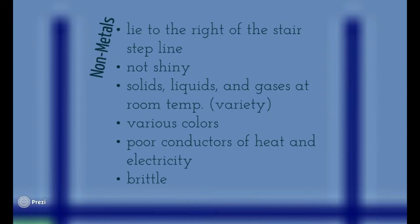Non-metals come in a variety of temperatures and many different colors, so they're not very plain like a metal is. By the way, when I say shiny, I might also use the word luster — luster means shine. Think about your jewelry — most jewelry is made out of metals and diamonds. Only one part is non-metal, basically the diamond part. Various colors, many different sizes. They are poor conductors of heat and electricity — I said poor, not that they don't conduct. They just do a very bad job at it.